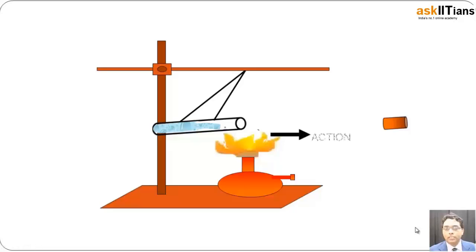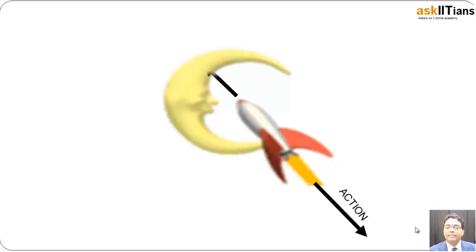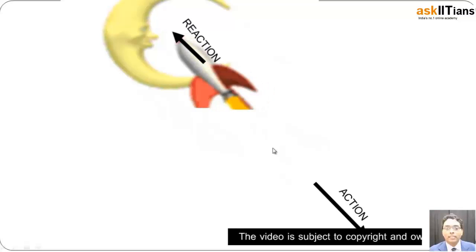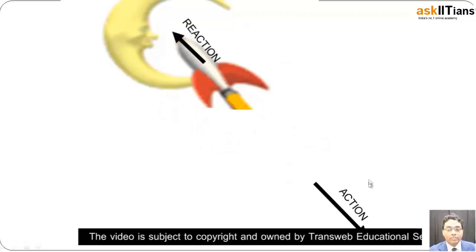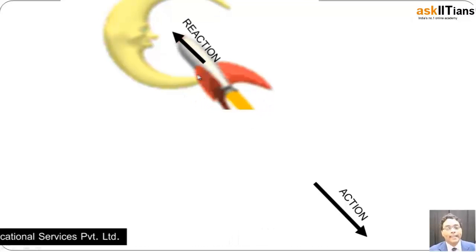This is the action and this is the reaction that we have. Action is the motion of the cork and the reaction is the motion of the test tube. In a similar manner, if I have a rocket that is flying off, the hot air gases that are coming out is the action that pushes the rocket in the forward direction.